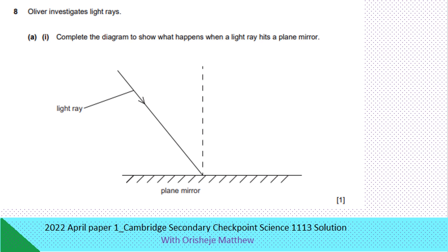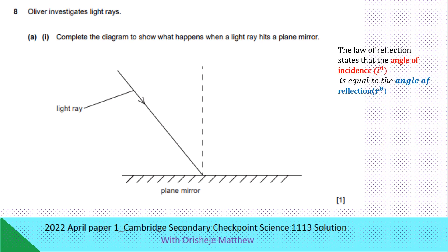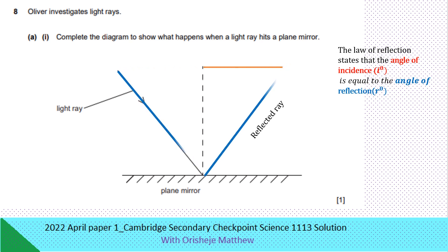Oliver investigates light rays. Complete the diagram to show what happens when a light ray hits a plane mirror. The law of reflection says that the angle of incidence equals to the angle of reflection. When a ray of light is incident on the surface of a mirror, it is reflected at the same equal angle. So you have the reflected ray.